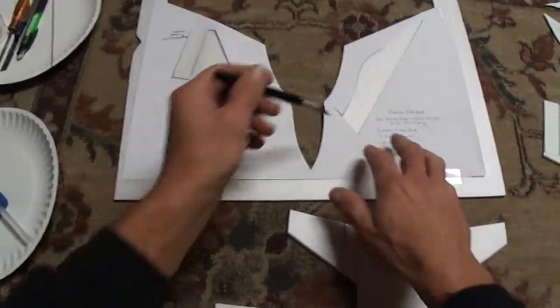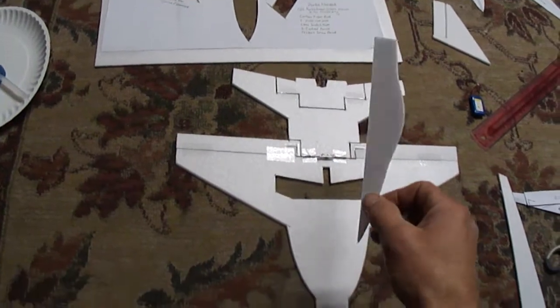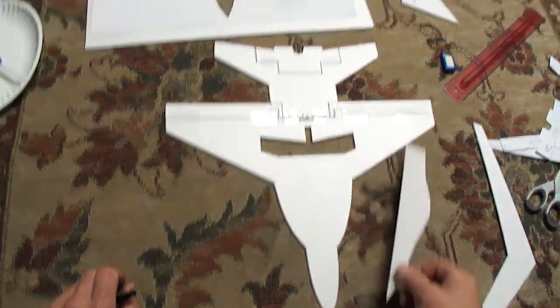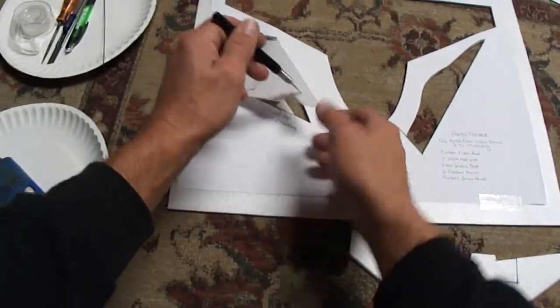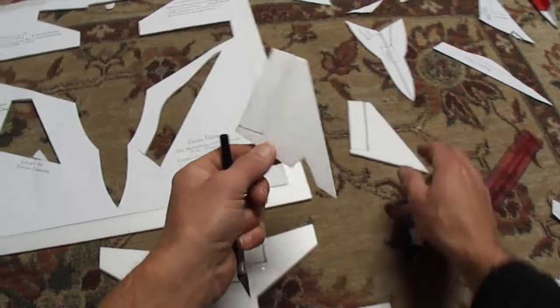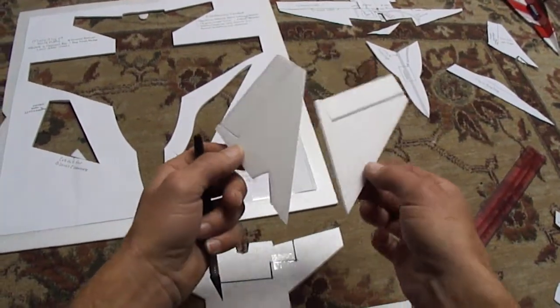Then we went ahead and cut out the main body, which would be the canopy. And we did our tail fin, in which we traced this one out and made another one, which you need two.